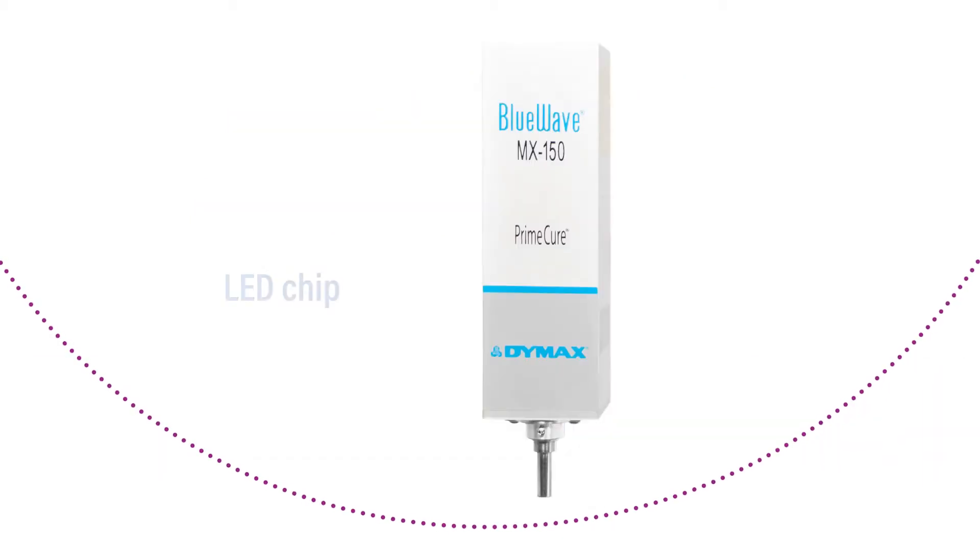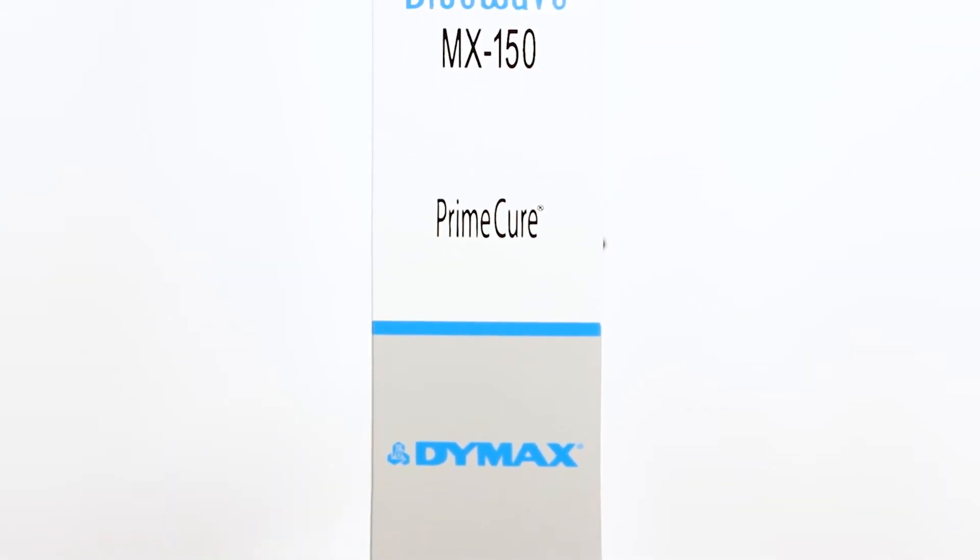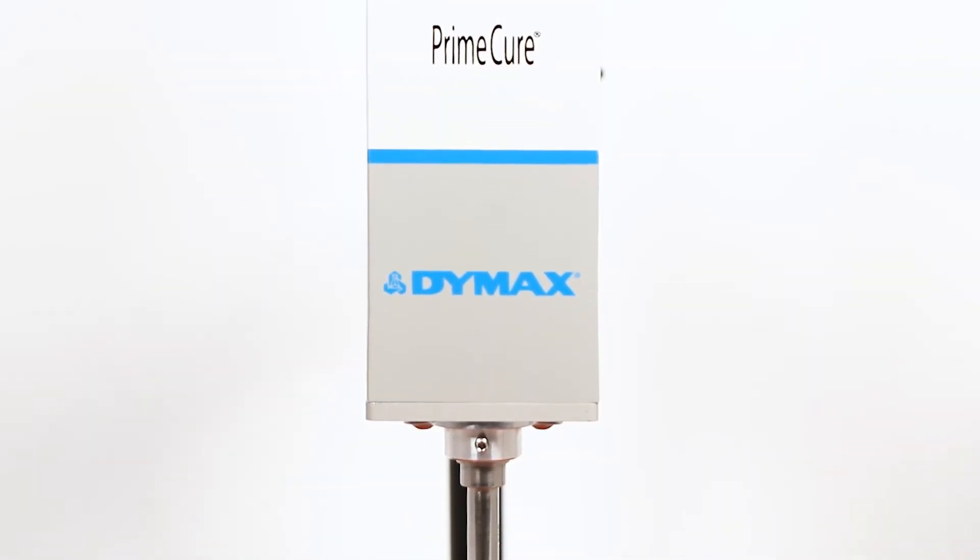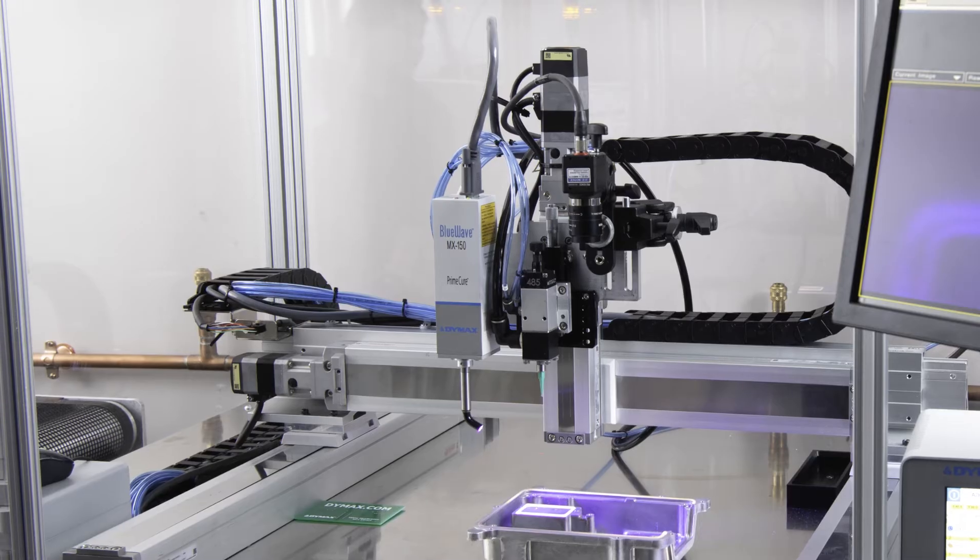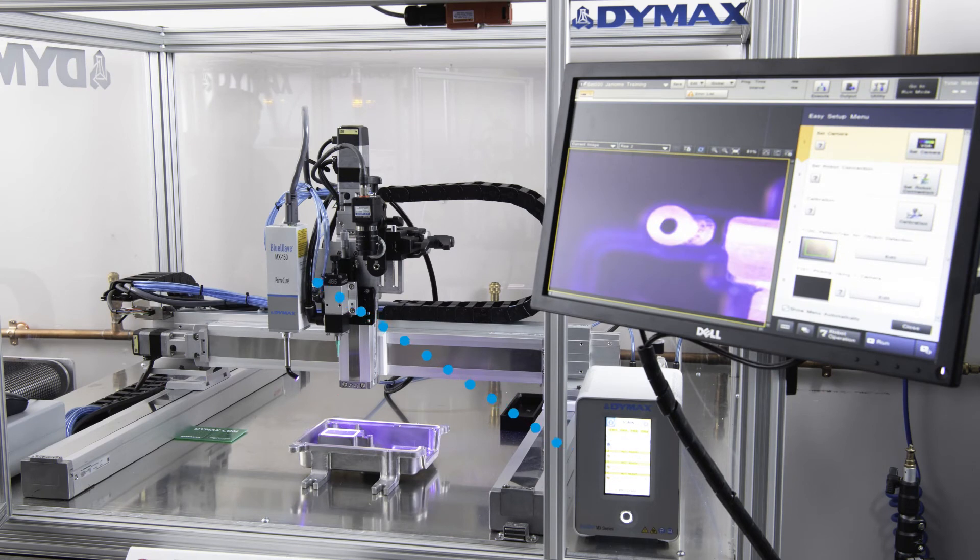The LED chip is located inside the emitter, unlike a traditional spot cure system where the chip is located within the controller. This configuration provides manufacturers with high-intensity spot curing and a small, efficient design. The emitters can also be easily mounted to robotic arms in automated systems or further from the controller without fear of intensity variations.